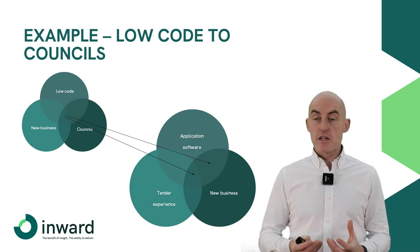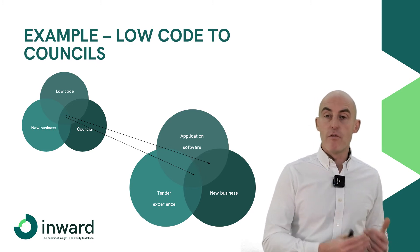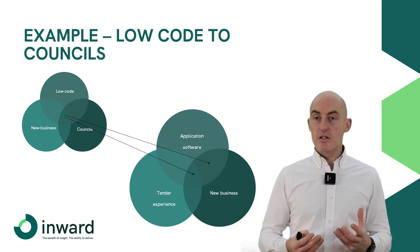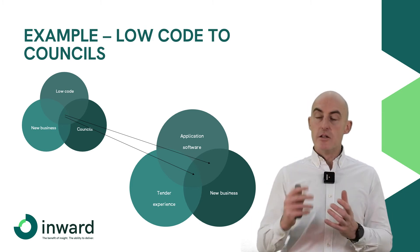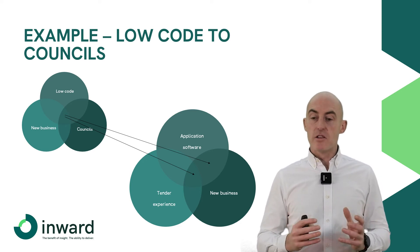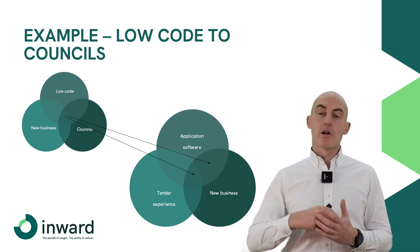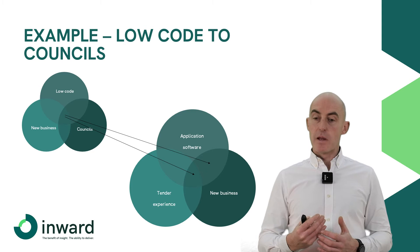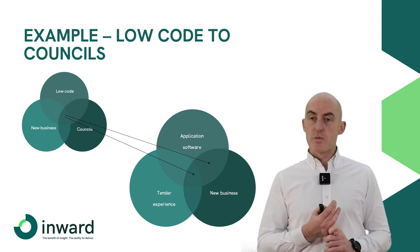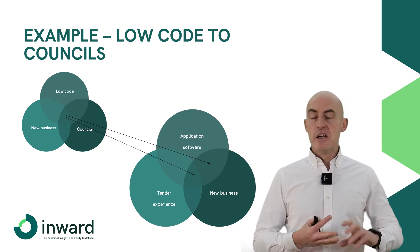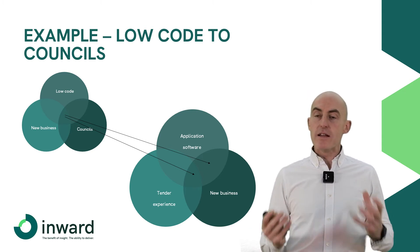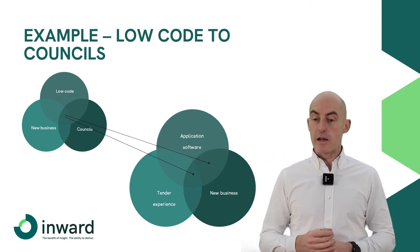And if none of those people are looking for a job, they will not fill their brief. So what I'd like to suggest is that they widen — make the three circles bigger to widen the cohorts. So let's say they look at application software salespeople rather than low-code. Could a business process management salesperson do it, ERP, CRM? Could one of those people do it? If the answer is yes, then that circle is bigger.